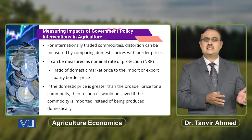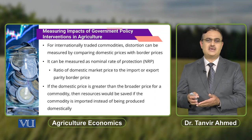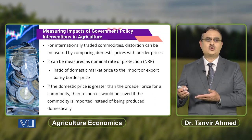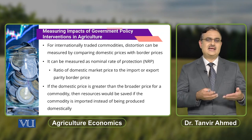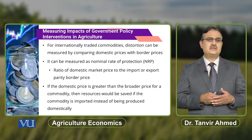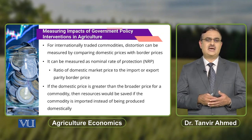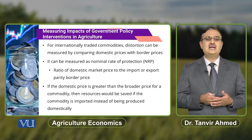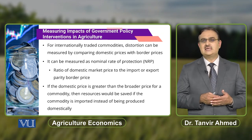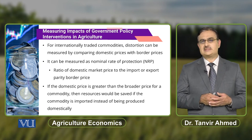A simple comparison of domestic price with border price can give you some idea about the distortions that exist in the local market. This can usually be measured through the Nominal Rate of Protection, which is equal to the ratio of domestic market price to the import or export parity border price.